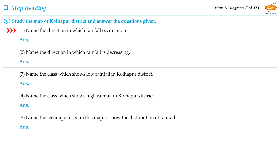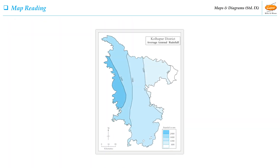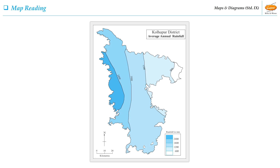Let us see the first question of this activity: Name the direction in which rainfall occurs more. The rainfall is more in the western part of the district.